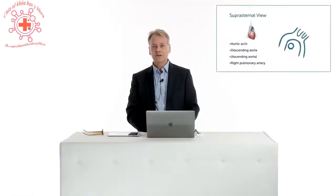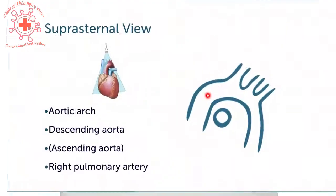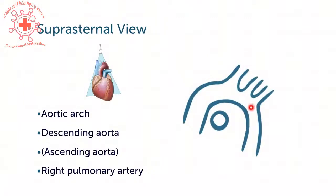The structures we can see include the aortic arch with the common trunk, the carotid, and the left subclavian artery. By convention, the ascending aorta is on the left part of the screen, the descending aorta is down here, and underneath the aortic arch is the right pulmonary artery.